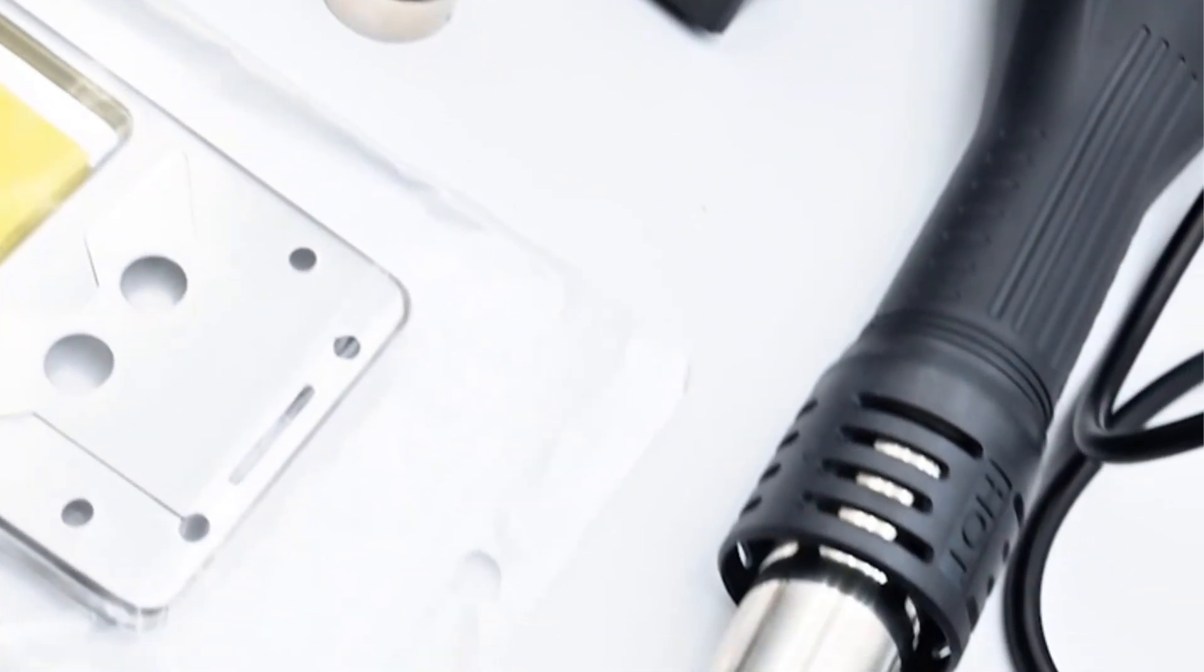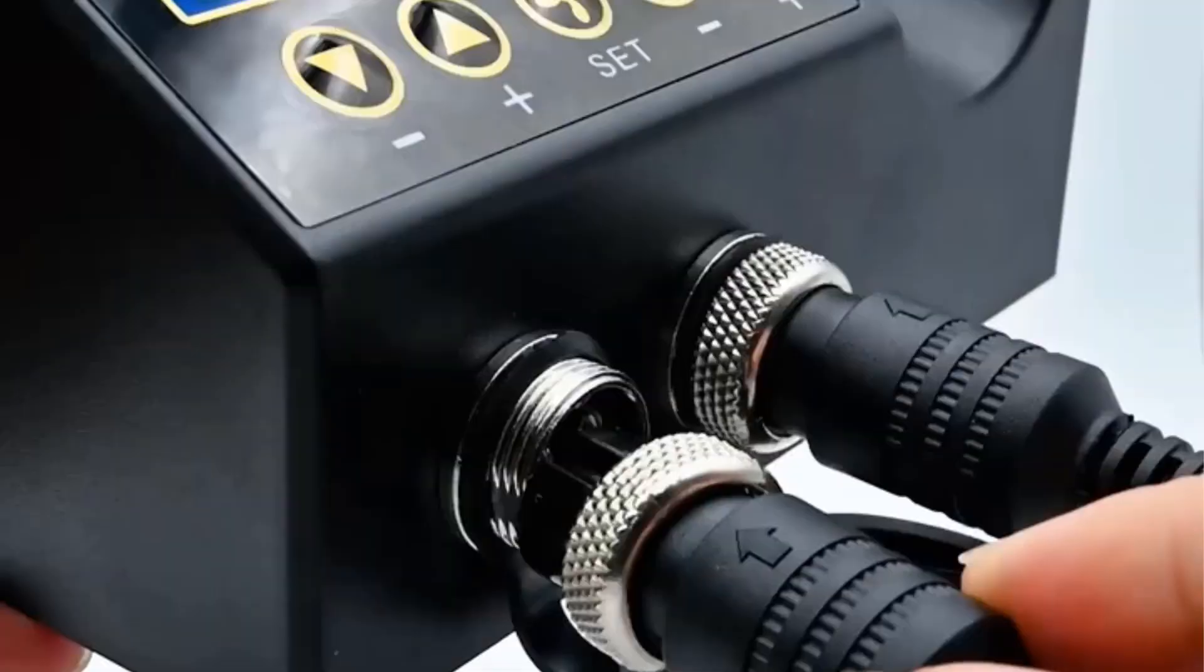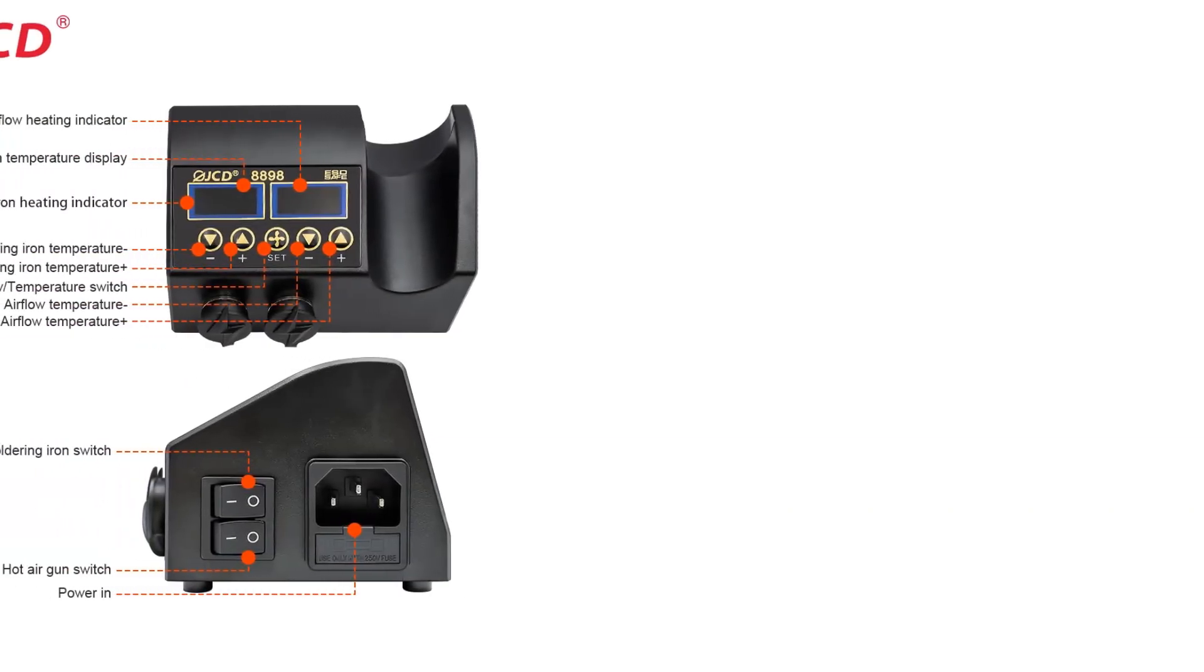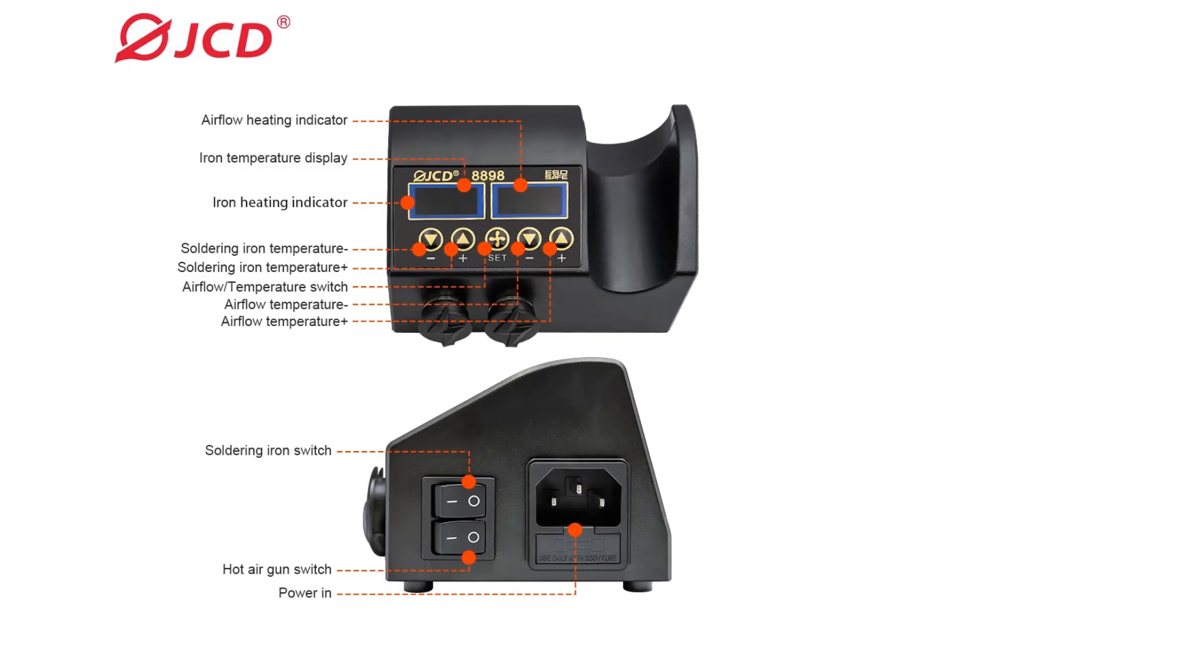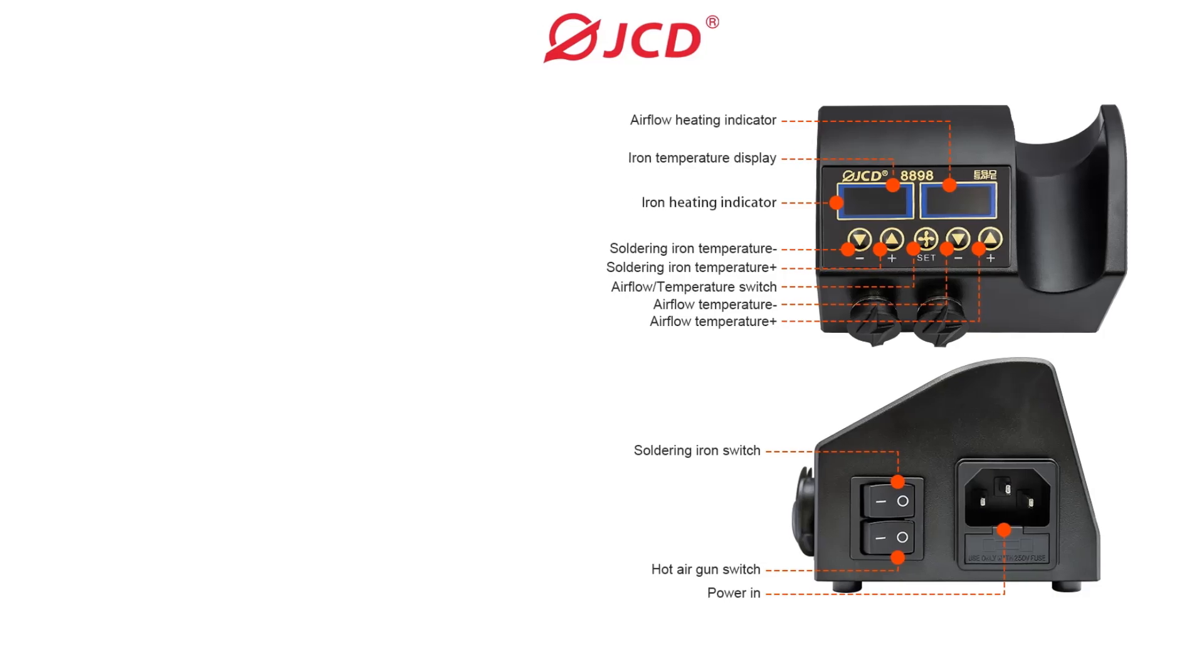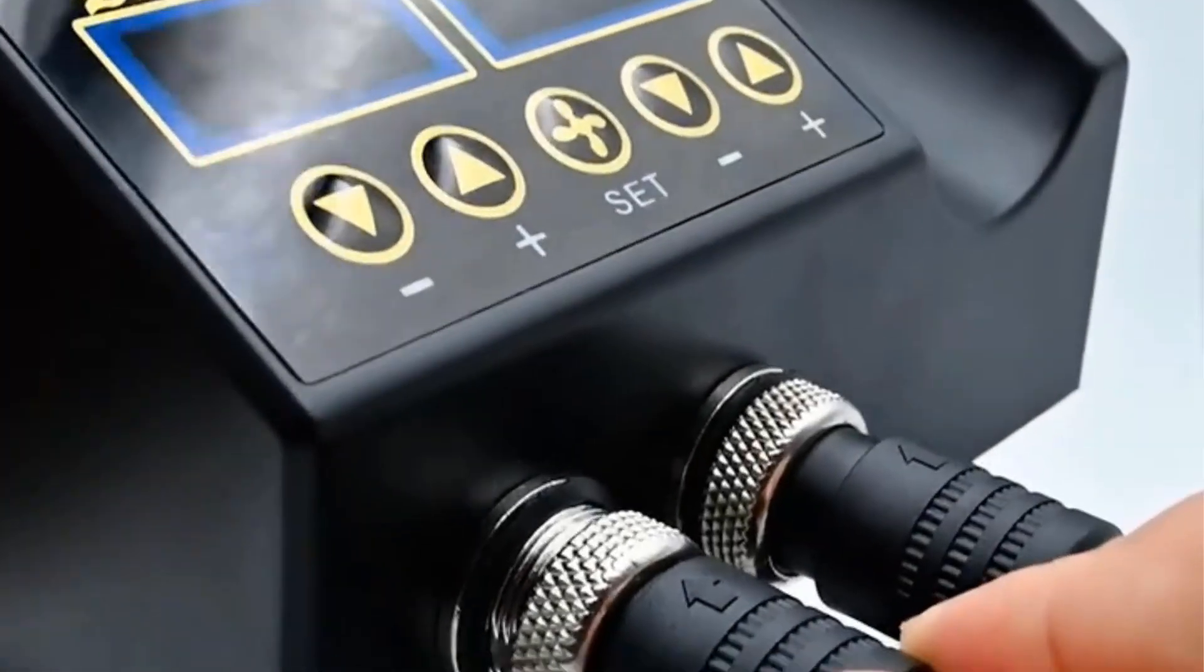With its dual LCD digital displays, users can easily monitor and set the temperature within a range of 100°C to 480°C for the hot air gun and 180°C to 500°C for the soldering iron, ensuring excellent temperature stability of ±2°C and ±1°C respectively.